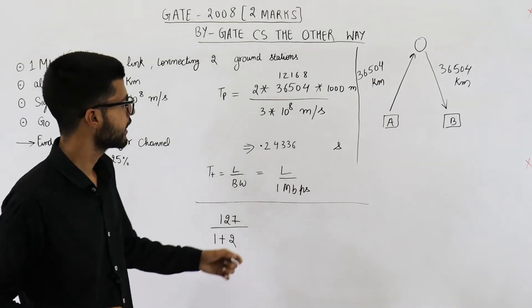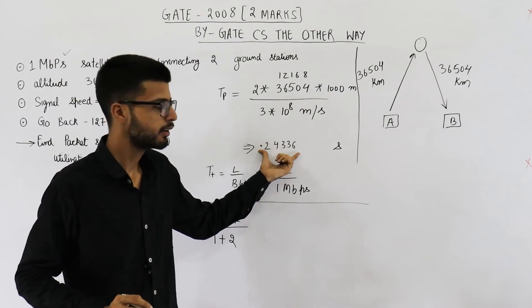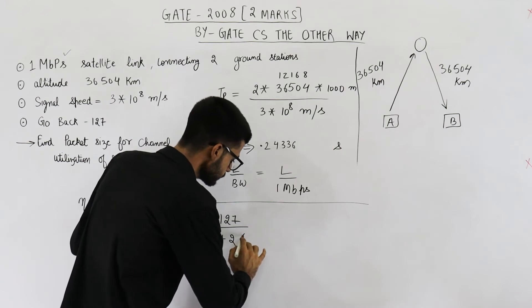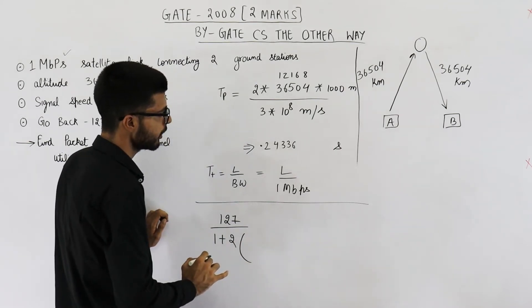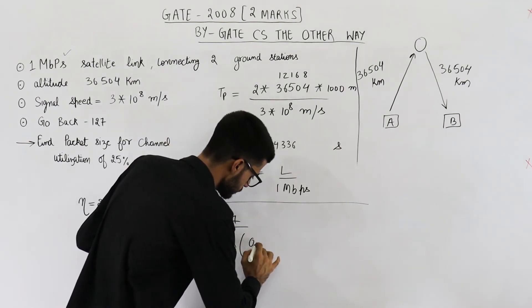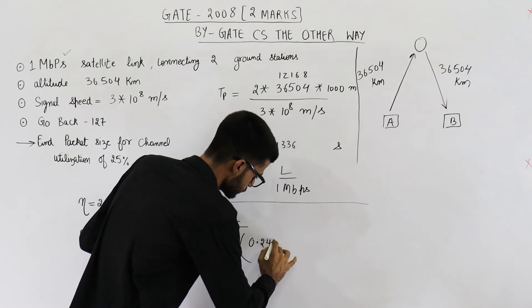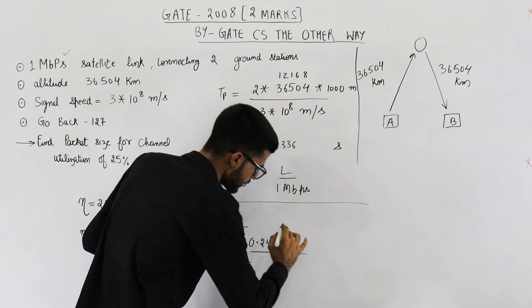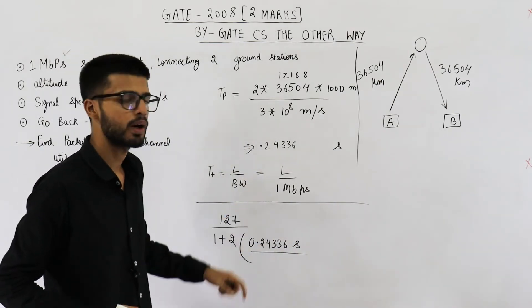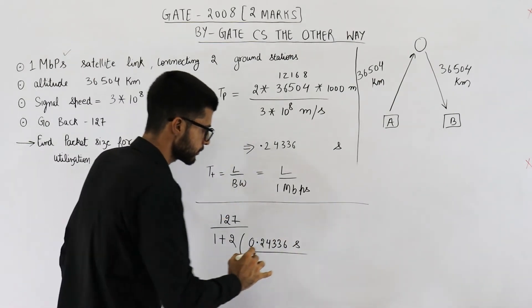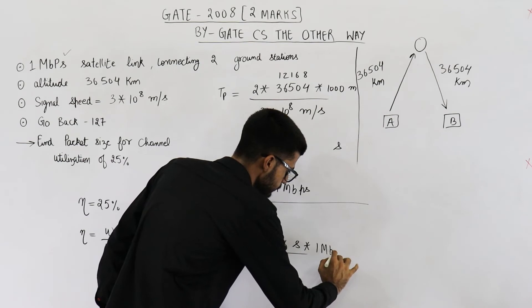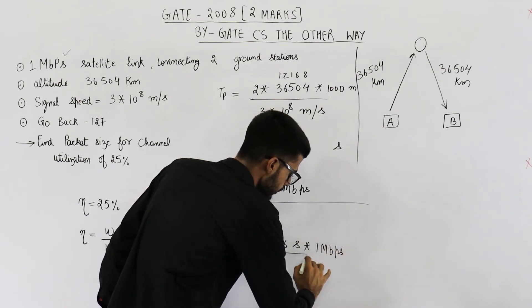A is defined as propagation delay divided by transmission delay. So it will be propagation delay is 0.24336 seconds divided by L upon 1 Mbps. That means multiplied by 1 Mbps upon L.